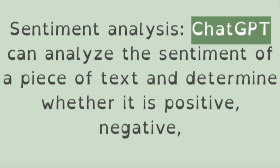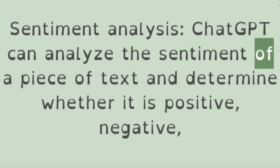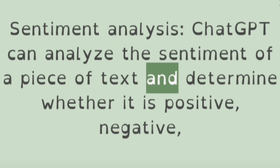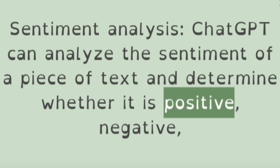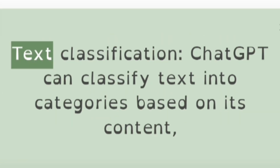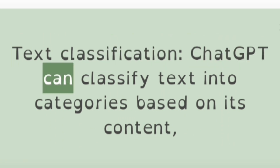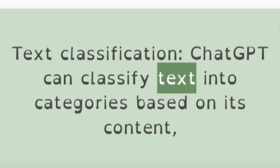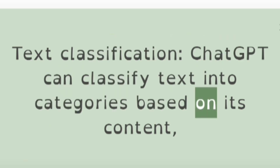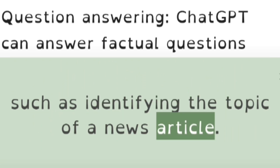Sentiment analysis: ChatGPT can analyze the sentiment of a piece of text and determine whether it is positive, negative, or neutral. Text classification: ChatGPT can classify text into categories based on its content, such as identifying the topic of a news article.